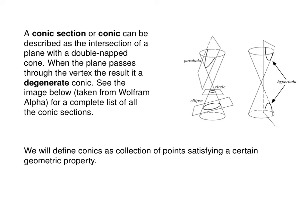If you have a plane that does not pass through the vertex, you're going to get either a circle if that plane is parallel to the base, an ellipse if it's a little tilted, a parabola, and then a hyperbola if it intersects both parts of the cone. So that's one way of finding a conic section.